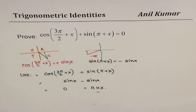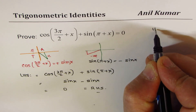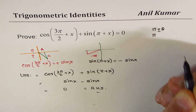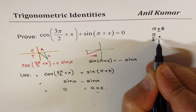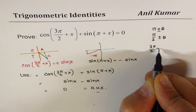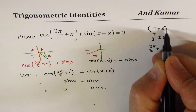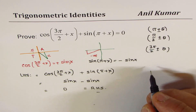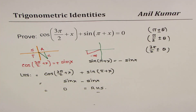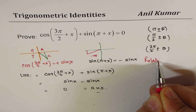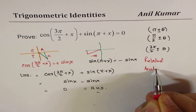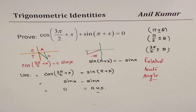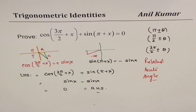Such identities — where you have π ± θ, or π/2 ± θ, or 3π/2 ± θ — can all be solved using related acute angles, as demonstrated in this video. I hope you find it very practical and interesting. Thanks for watching — feel free to write down your comments.